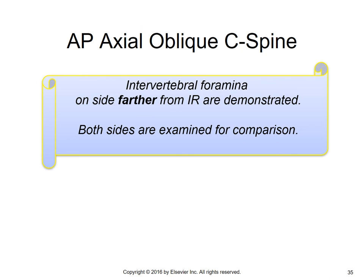For the AP axial obliques, most places perform AP axial obliques. Importantly, when doing AP obliques of the C-spine, the intervertebral foramina on the side farther from the IR are demonstrated. So if you do an LPO, the intervertebral foramina on the right side are demonstrated. If you do an RPO, the foramina on the left side are demonstrated. PA obliques are the opposite: RAO demonstrates the foramina on the right side closest to the IR; LAO demonstrates the foramina on the left side closest to the IR.